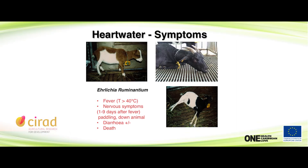Ehrlichia ruminantium, after infection, has an incubation period of about two to three weeks. Then there's a rise in fever and the animal becomes inappetent. Nervous symptoms can start between one and nine days after onset of fever. You can see rigor in the animal — they can be paddling, then remain on the floor. They can show respiratory difficulty because of edema in the lung. The animal then goes into lateral decubitus and shows opisthotonus symptoms marked by rigidity. Diarrhea can be seen mainly in bovine.